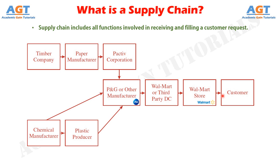A supply chain is dynamic and involves the constant flow of information, product, and funds between different stages. In our example, Walmart provides the product, as well as pricing and availability information, to the customer.